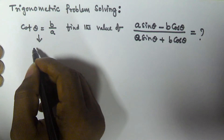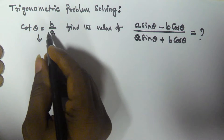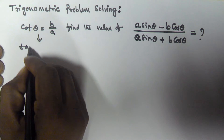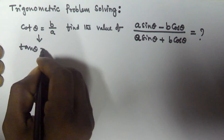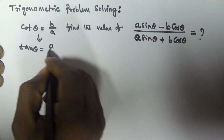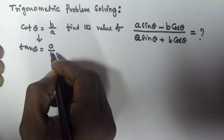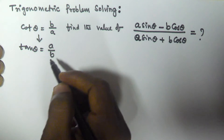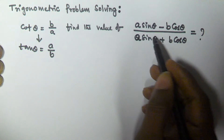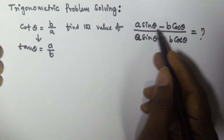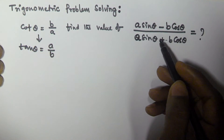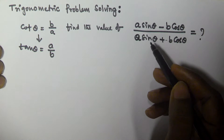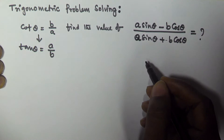From the given condition, we know that tan theta is the reciprocal of cot theta. So that means tan theta is equal to a by b. So we have the values of cot theta and tan theta, and we need to find the value of the given expression.